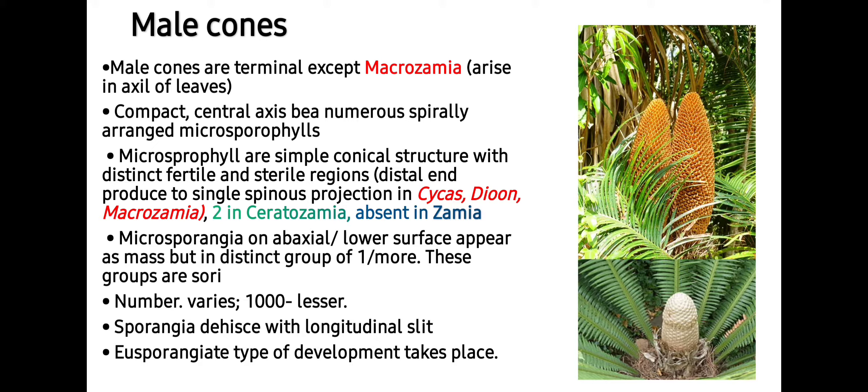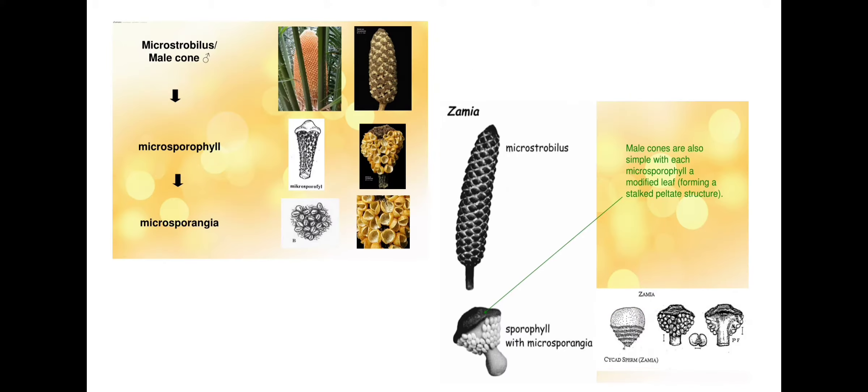Microsporangia are present on the abaxial or lower surface. They appear as a mass but in distinct groups of one or more. These groups are called sori and their number varies up to one thousand. Sporangia dehisce with a longitudinal slit and their development is of the eusporangiate type, meaning they develop from a group of initials.